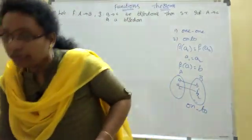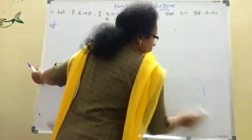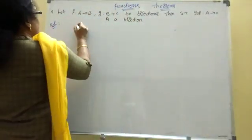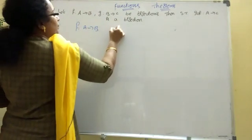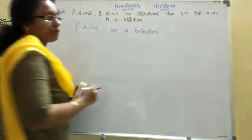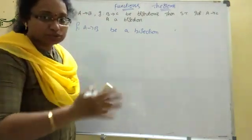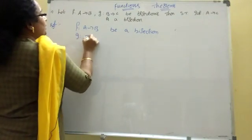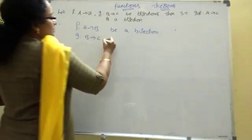Now we will get the bijection theorem. What is given here: F from A tends to B — that is a bijection function. A tends to C is also a bijection function.